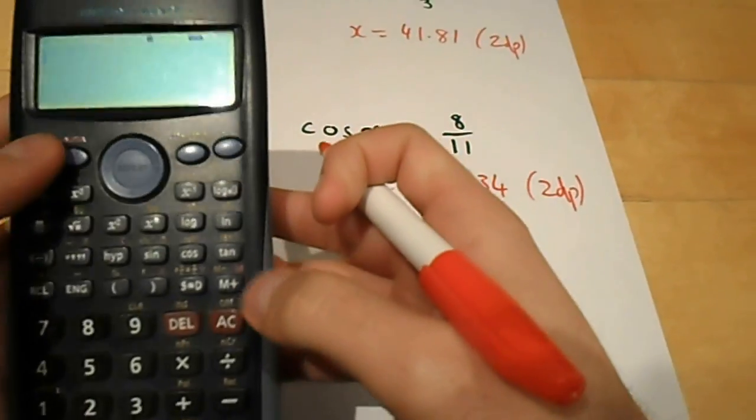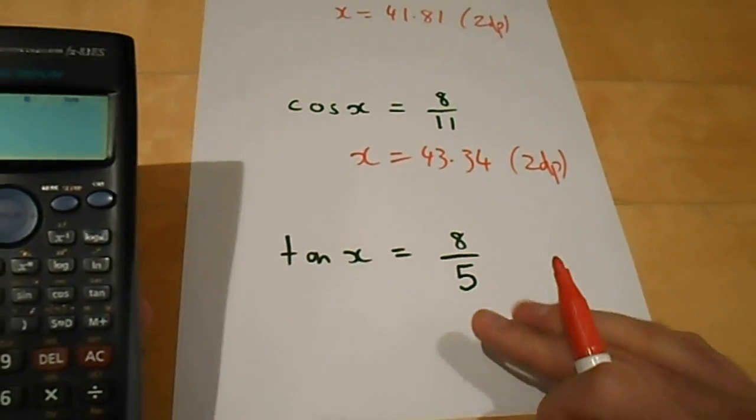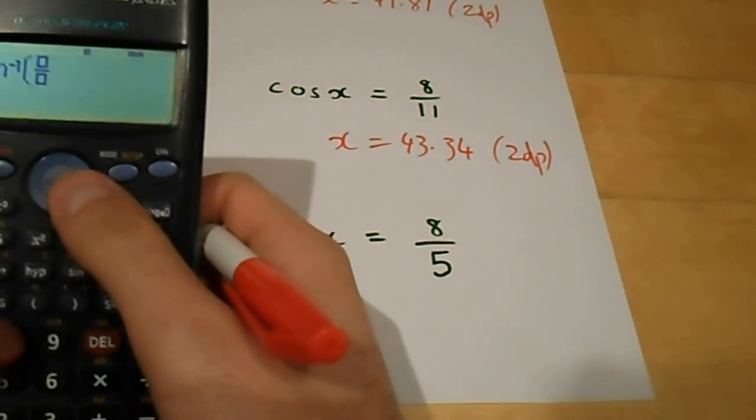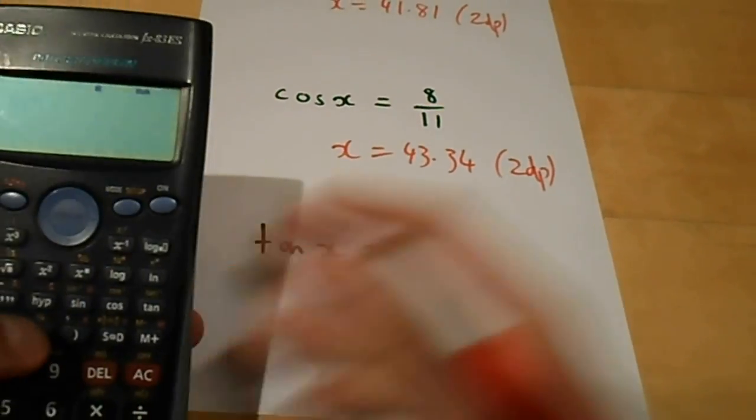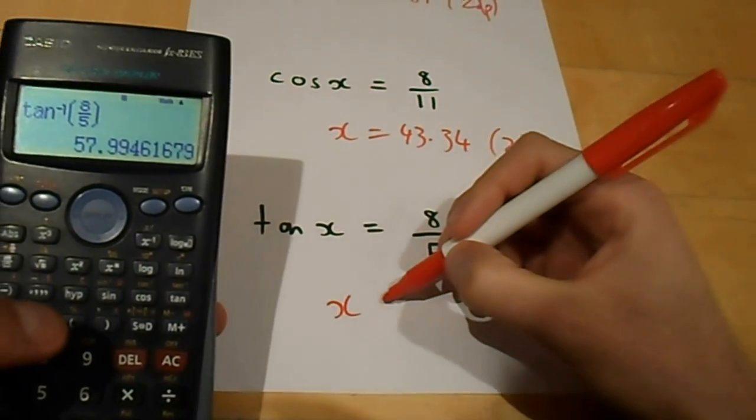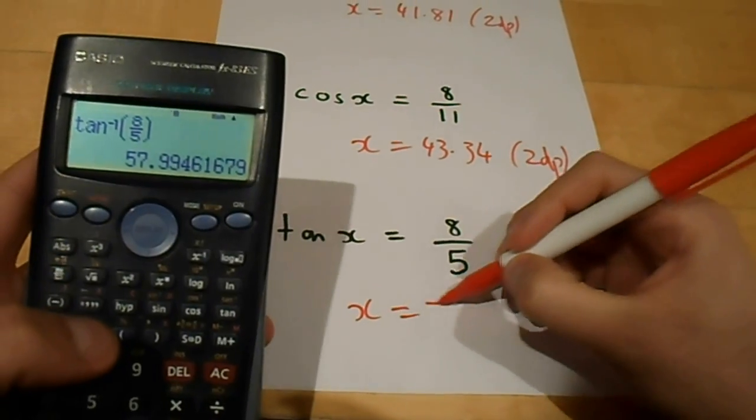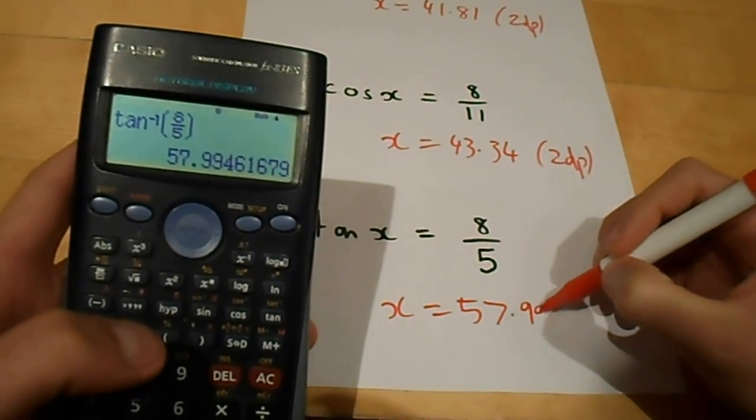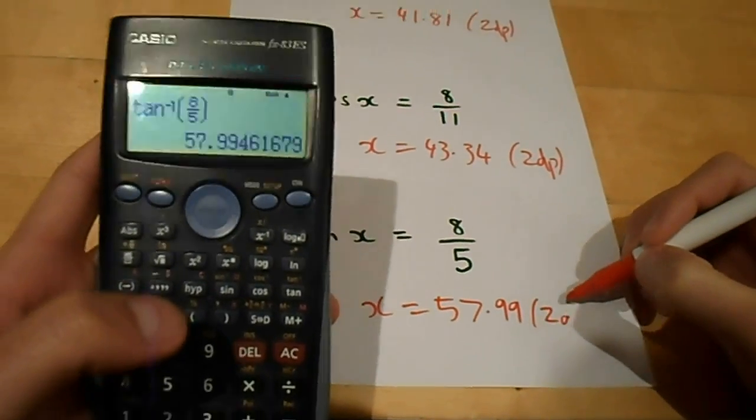Exactly the same with tangent. Shift, tan, 8 over 5 this time. And then x would be equal to 57.99 to two decimal places.